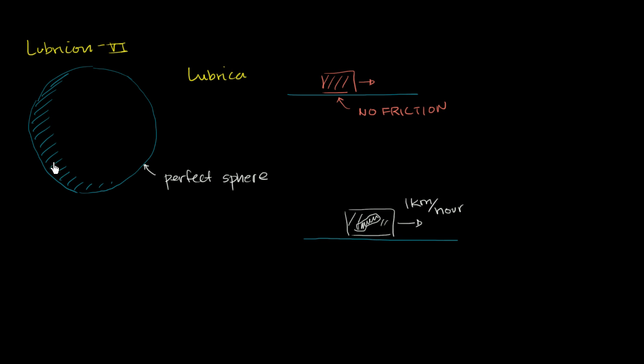If we were to look at it from this kind of macro scale, when we're looking at the planet, let's say that that is the frozen sock, and it is traveling along the equator of Lubricon 6.